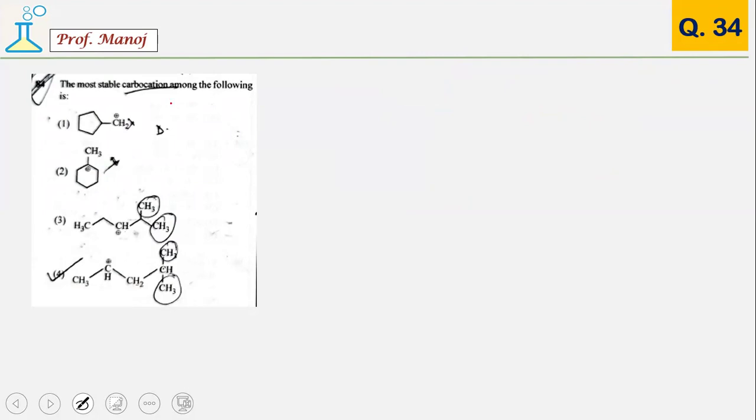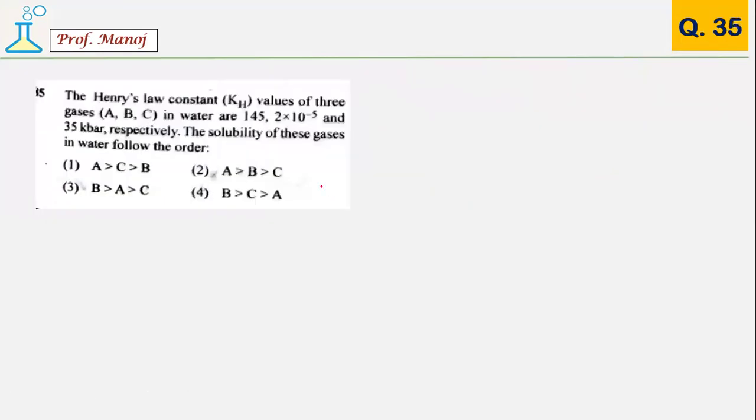Next question is about stability of carbocation. Obviously, we search about stability. Tertiary is greater than secondary than primary. The least one is methyl carbocation. When you search over here, a very simple answer you can see is number 2.